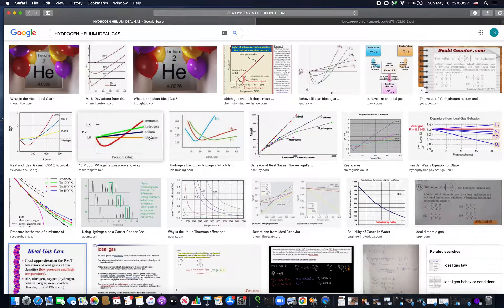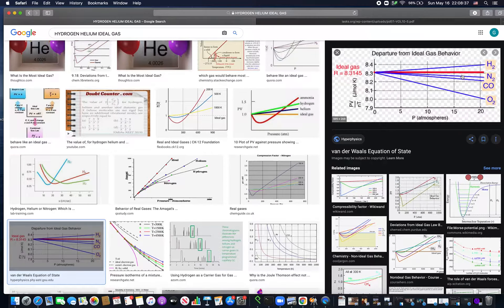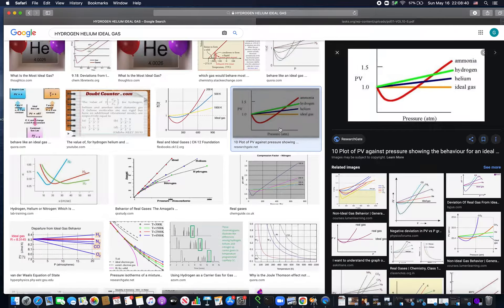These charts show you a bunch of gases: hydrogen, helium - here's the most ideal gas. Then you have ammonia, a highly non-ideal gas. Hydrogen again is better than a bunch of these ones, and so on.